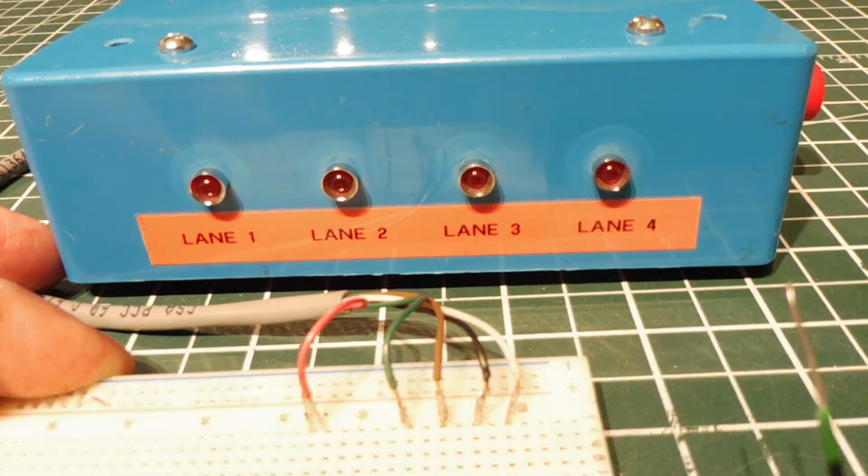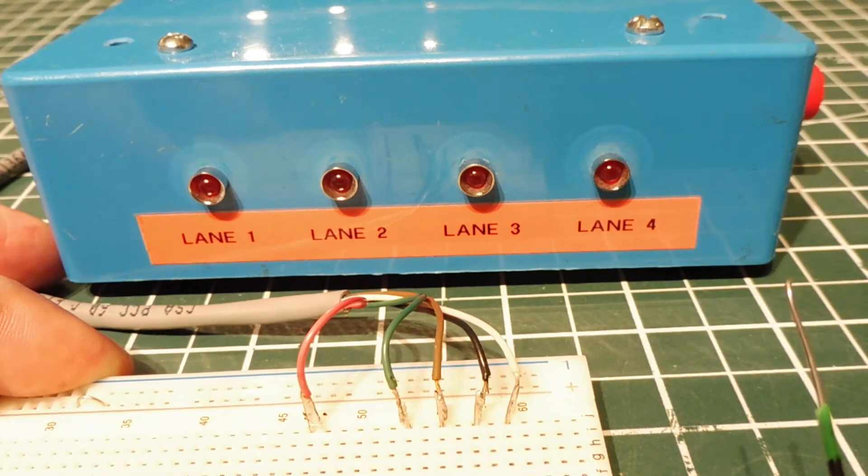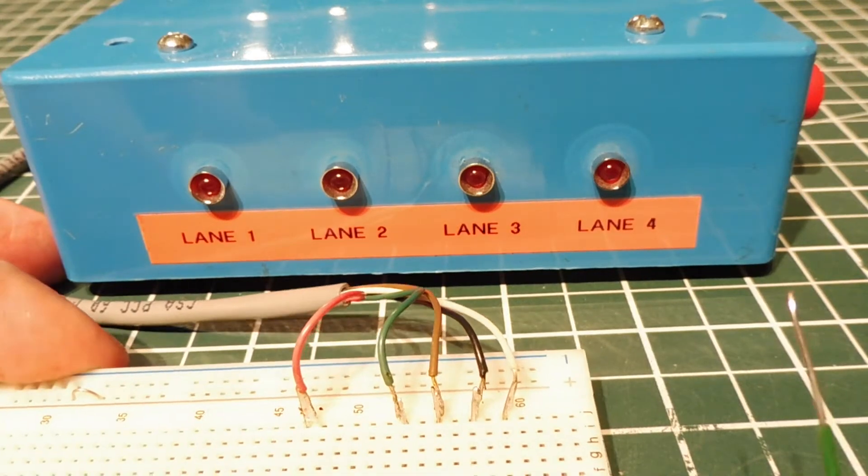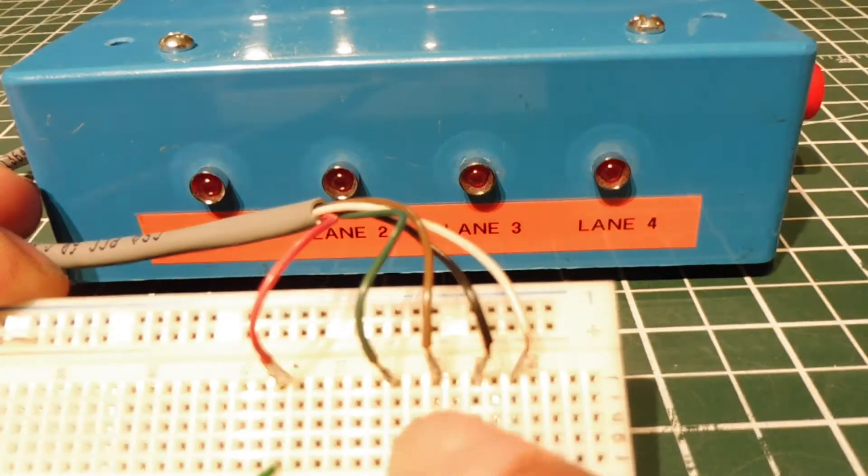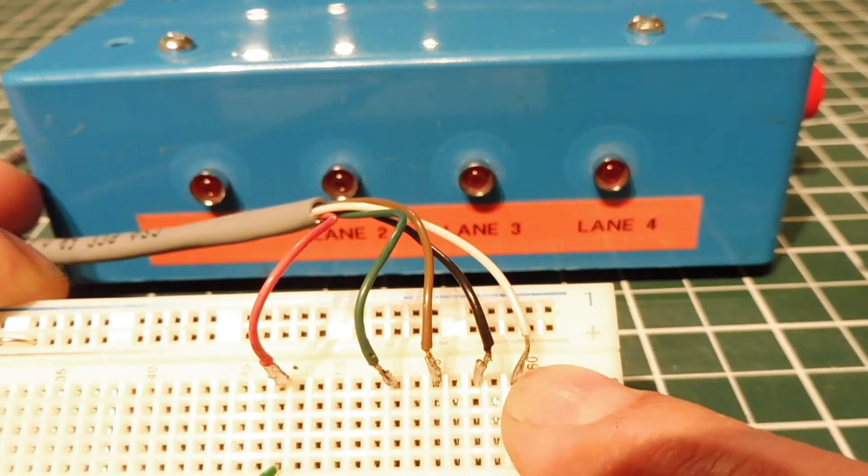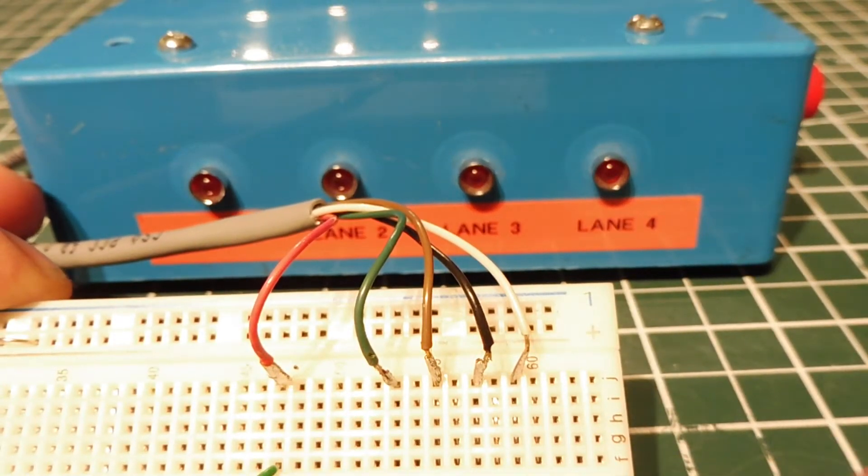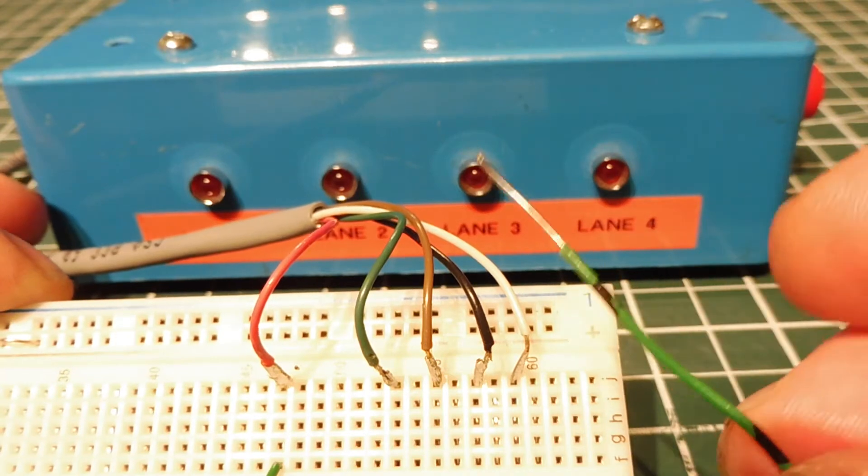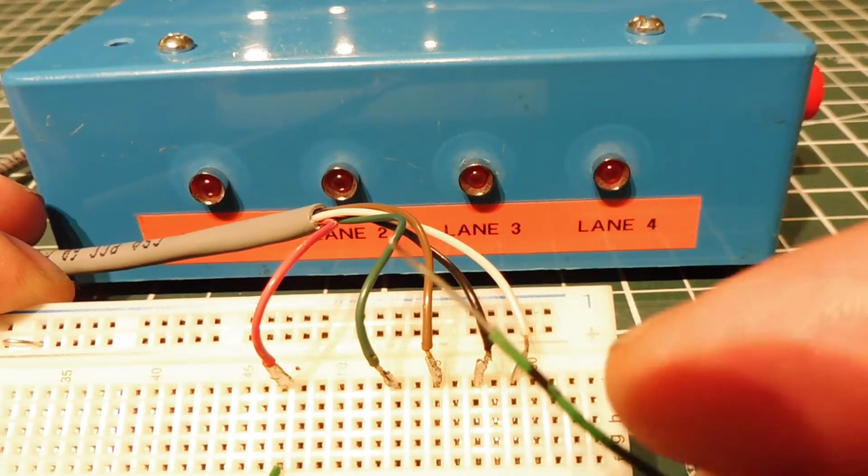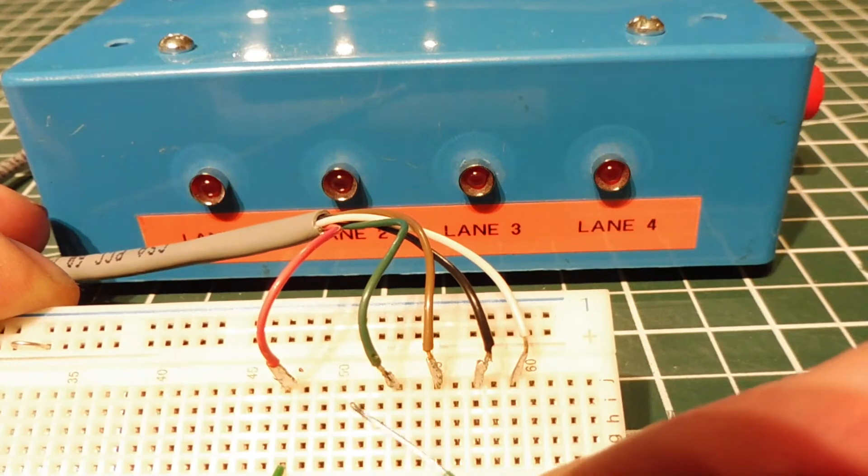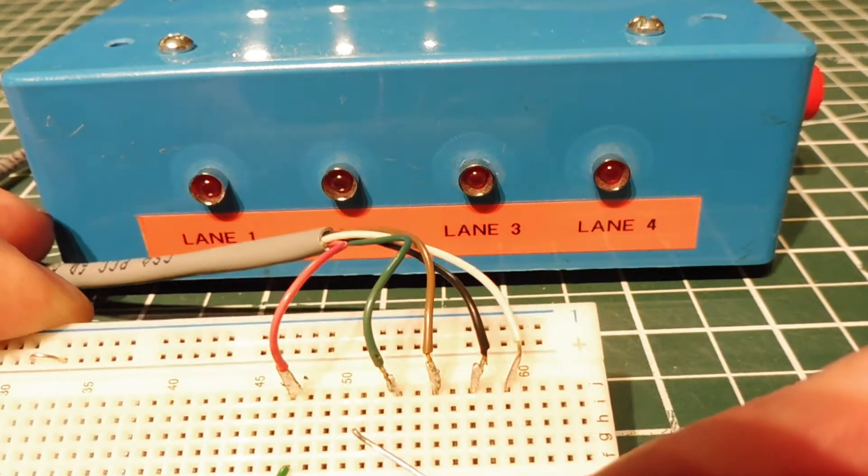Okay, I have my project box powered up and I brought out the lane one to lane four trigger wires onto my breadboard. That's lane one, two, three, and four. The wire on the very left is my plus nine volts, that's my trigger voltage, and I have that connected to a wire. So now I can trigger each lane by touching the lane one to lane four trigger wires.